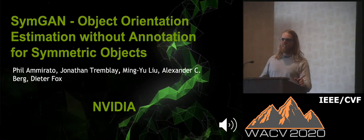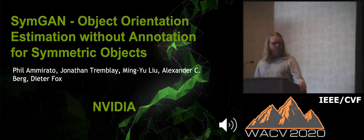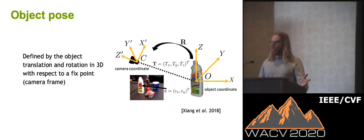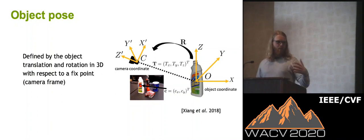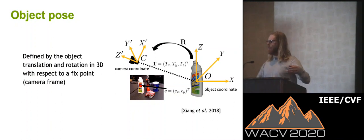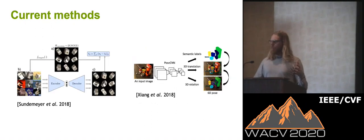Hello, everyone. I'm Jonathan. I'm here to talk about object orientation estimation without annotation for symmetrical objects. In this work, we're interested in pose estimation — we want to know where an object is in the 3D world with respect to a fixed point: both the translation of the object and the rotation of the object.